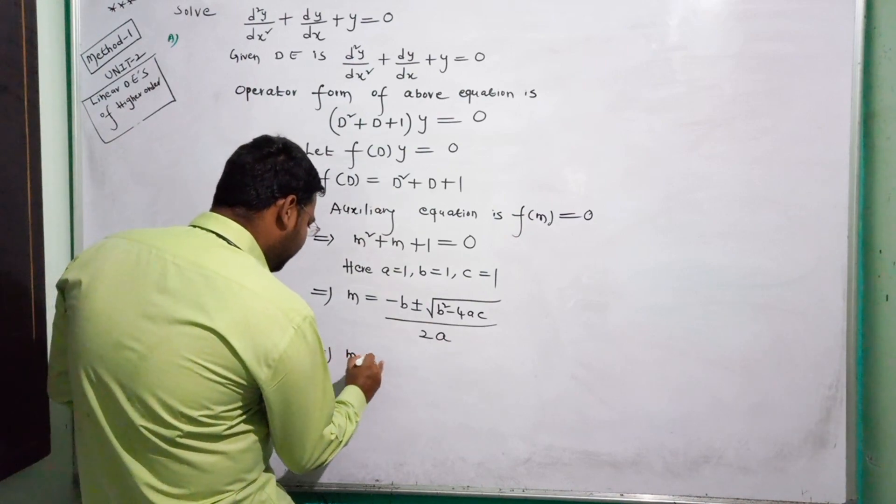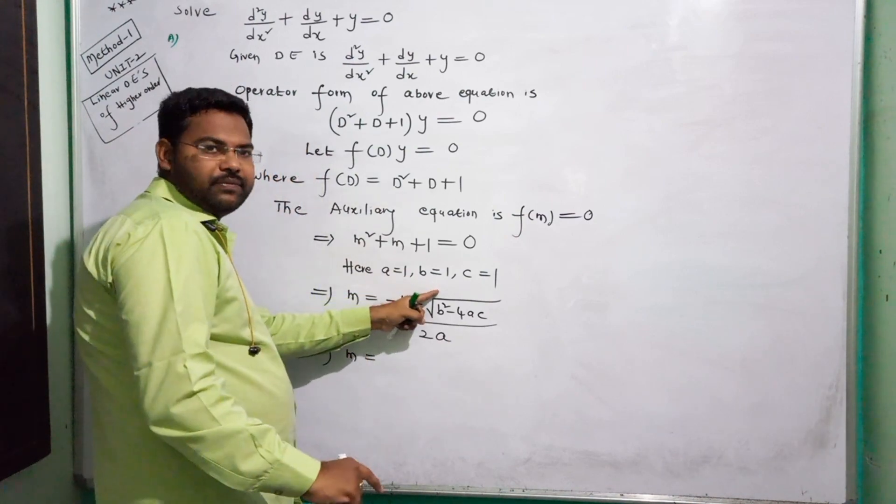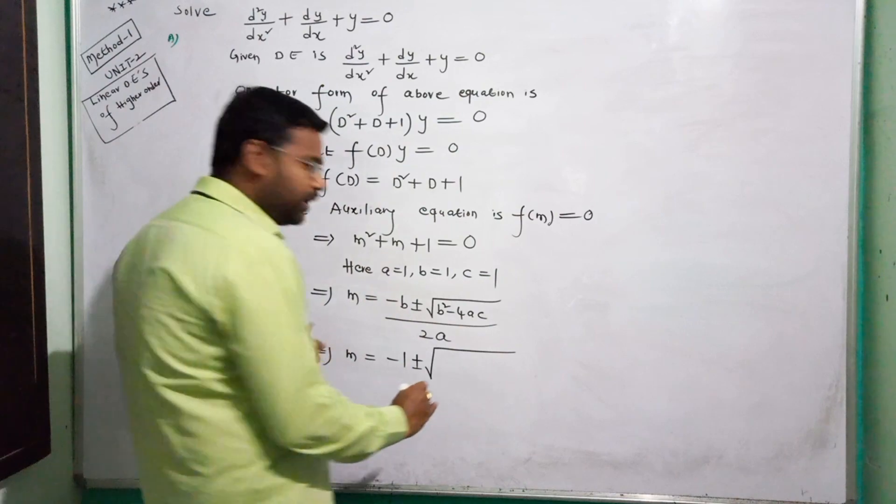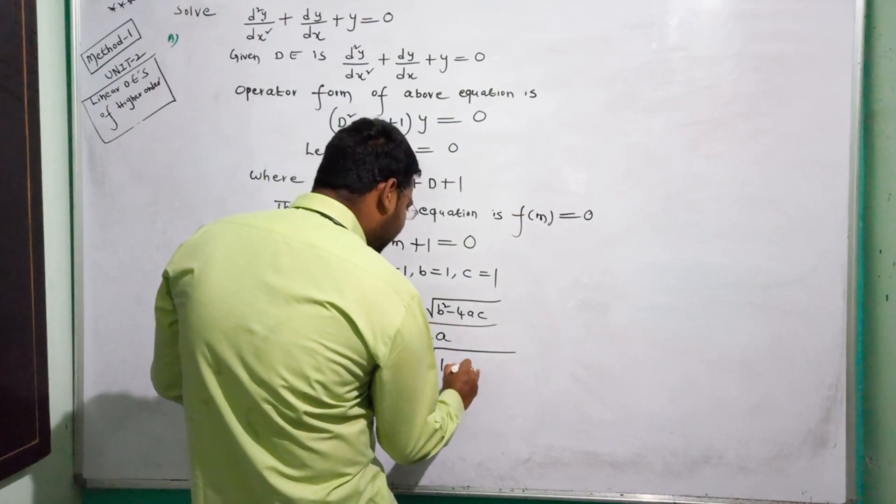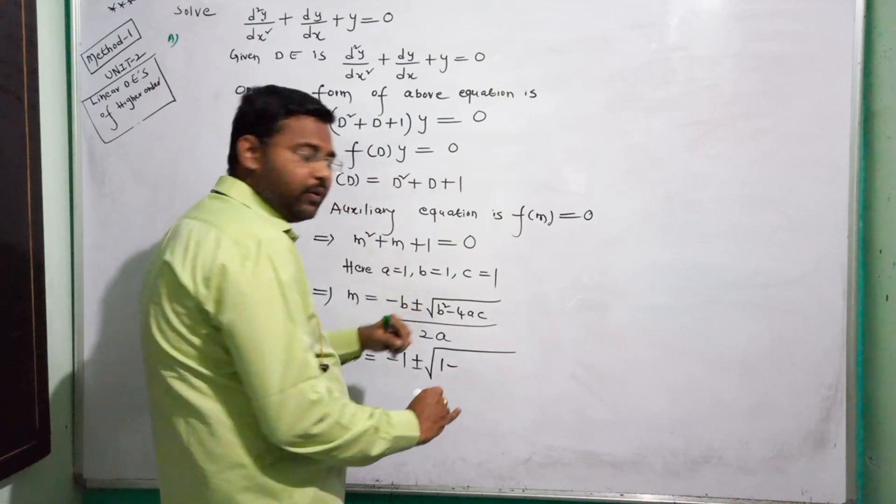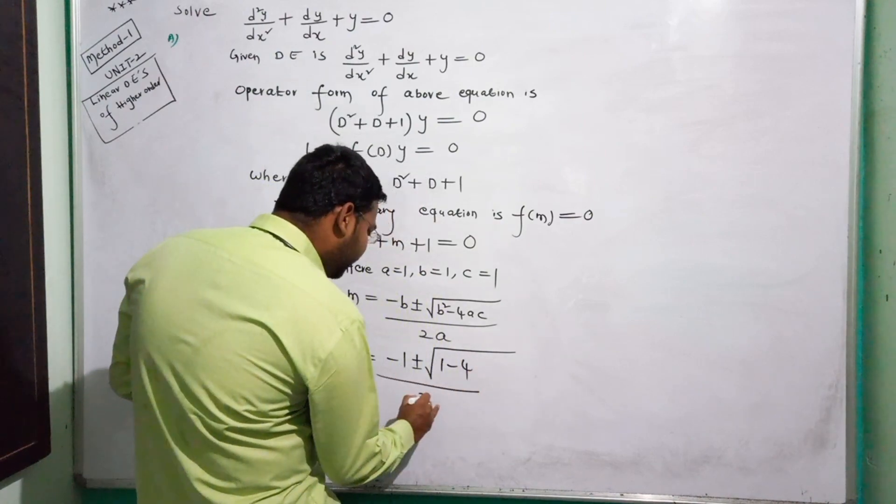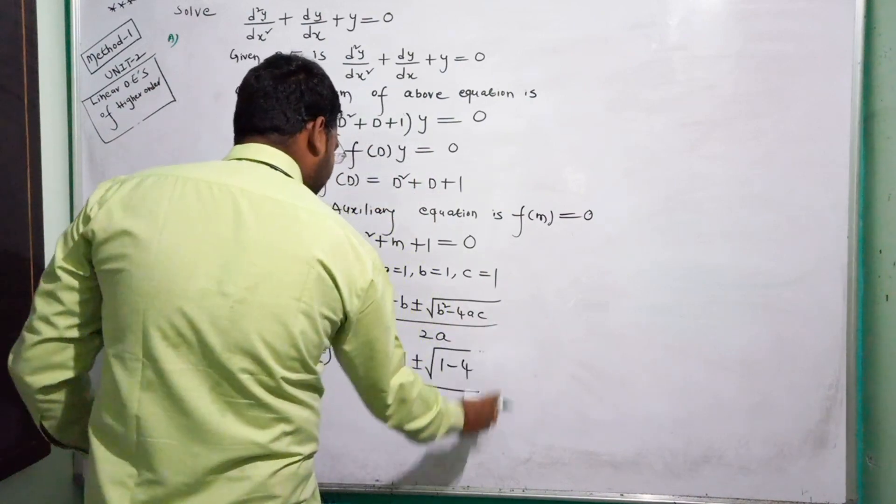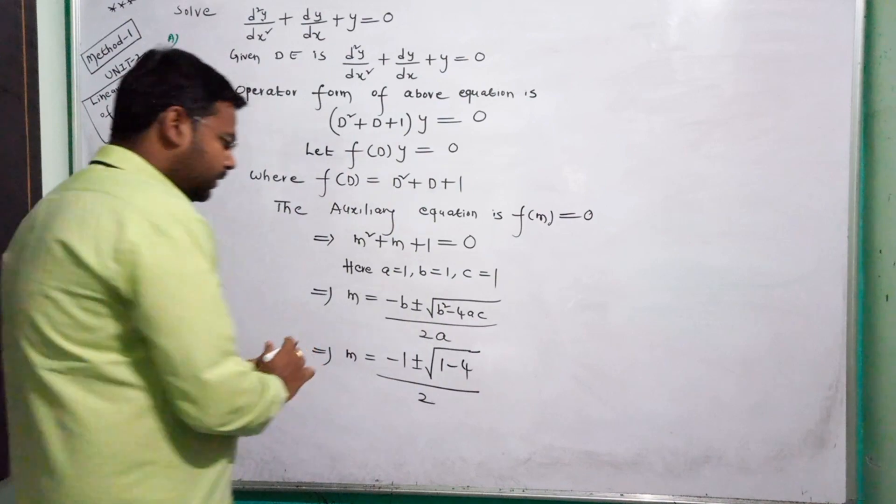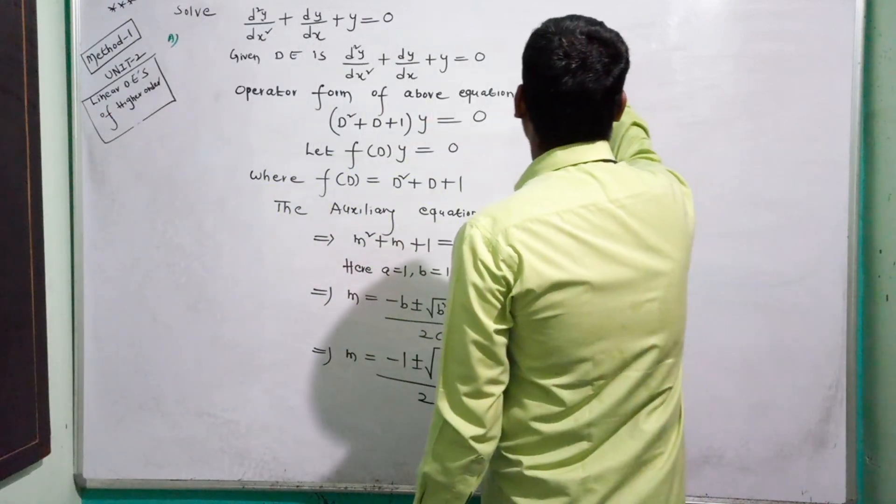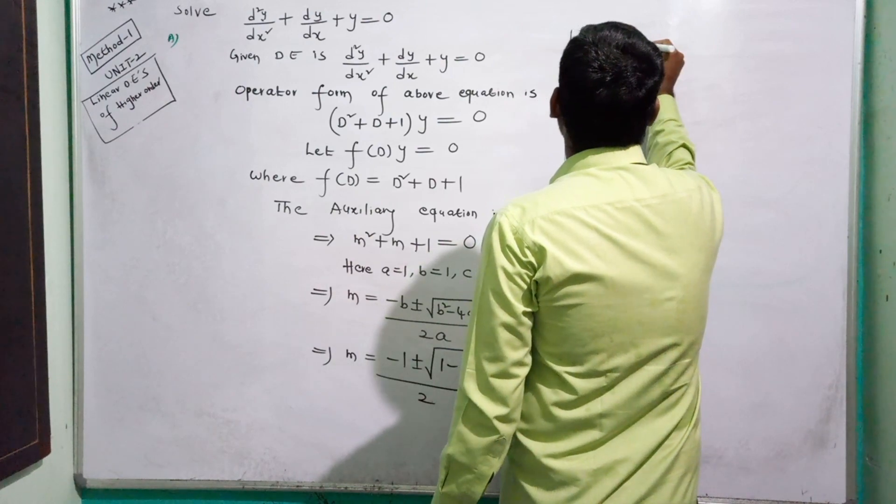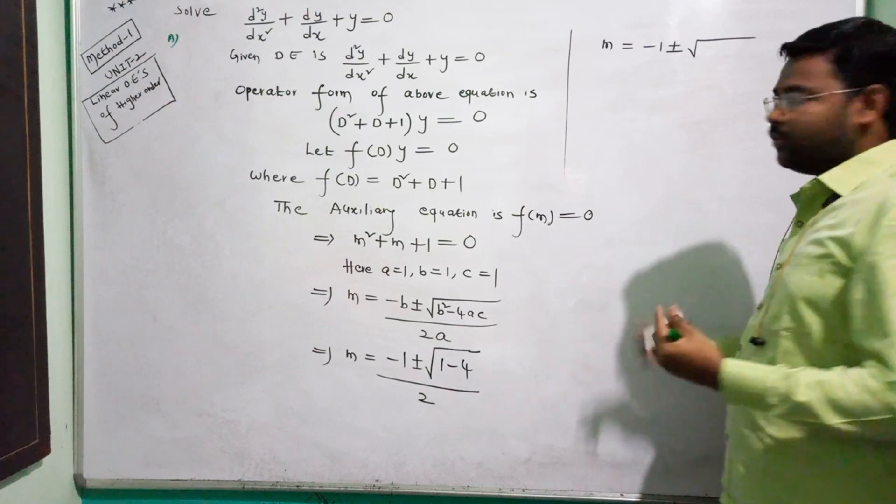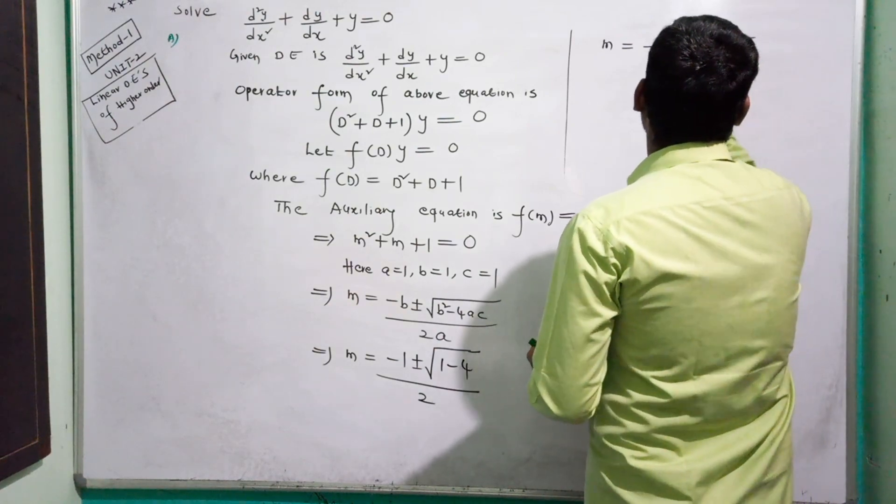Now M equals minus B plus or minus square root of B squared minus 4AC divided by 2A. That implies M equals minus 1 plus or minus square root of 1 minus 4, divided by 2.